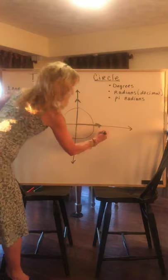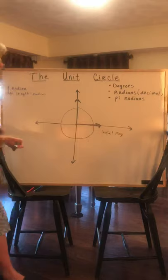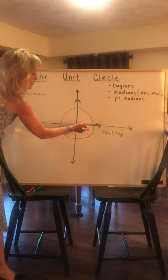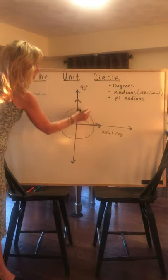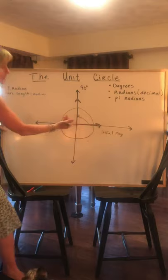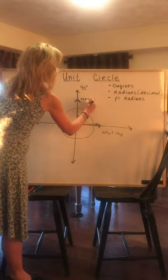We're going to call that the initial ray and if we were going to move this angle, say we're going to start to rotate around the circle but not the whole way, maybe here we would end up at 90 degrees. We would form a right angle and that would be called the terminal ray. So you have an initial ray and you have a terminal ray.